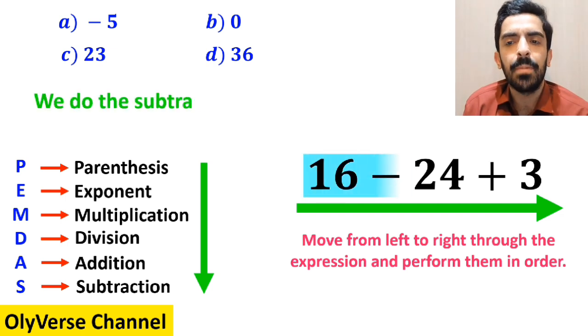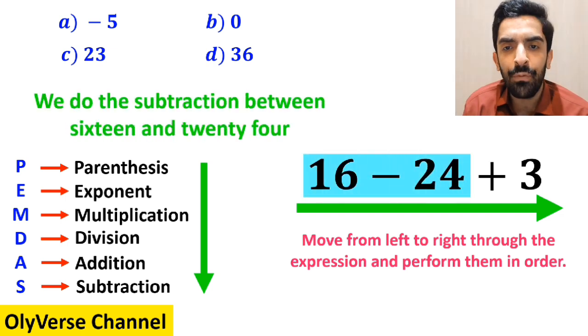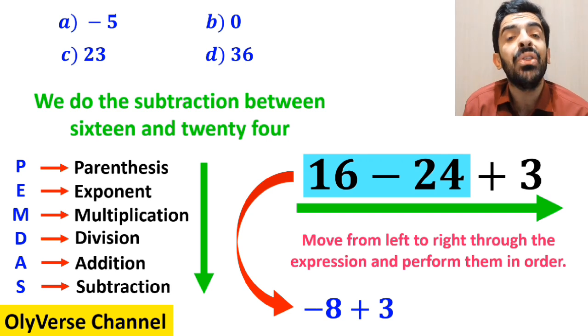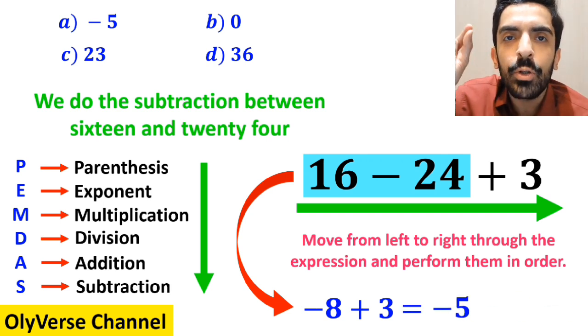So, first we do the subtraction between 16 and 24, which simplifies this expression to negative 8 plus 3. And finally, the value of this expression is equal to negative 5.